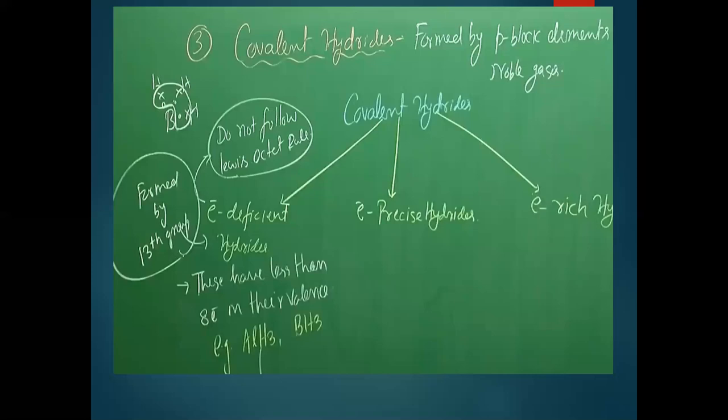General characteristics of covalent hydrides: they have molecular lattices held together by weak van der Waals forces, so they are generally soft with low melting and boiling points. They are volatile in nature and have low electrical conductivity. They are classified based on whether their octet is complete or not.